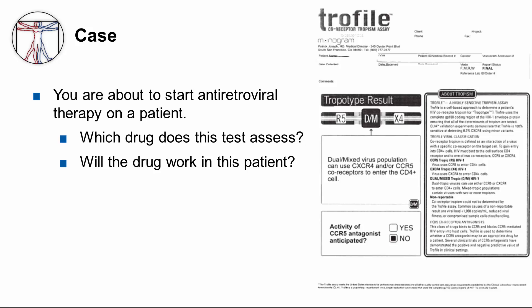Let's do a case to hone down this concept. You're about to start antiretroviral therapy on a patient. Which drug does this test assess, and will the drug work on this patient based on these test results? The TROPISM or co-receptor tropism assay tests whether or not Maraviroc, the entry inhibitor, will work. In this case, there's a dual or mixed virus population of not only CCR5 but also CXCR4. So the drug won't work since it is a CCR5 antagonist, and you would want predominantly CCR5 co-receptors present for drug activity.